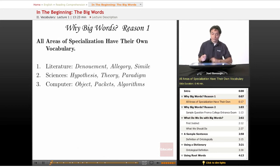Well, the first reason is this. Areas of specialization have their own special vocabulary. So, if I'm going to talk about something like literature, I'm going to talk about the denouement, I'm going to talk about allegory, I'm going to talk about simile.